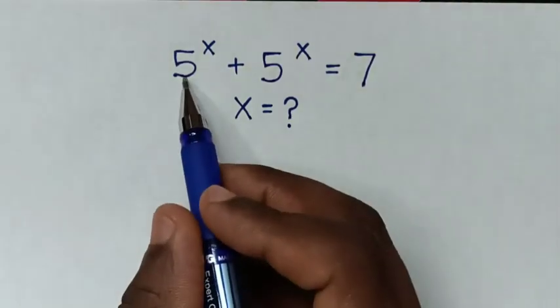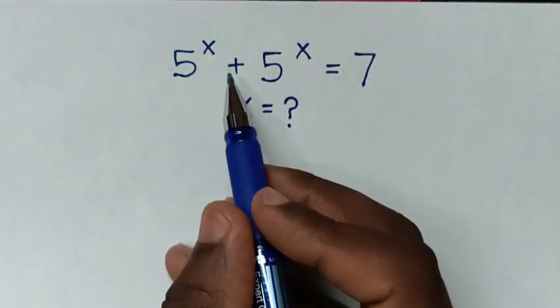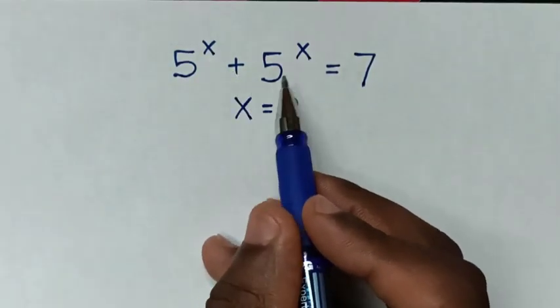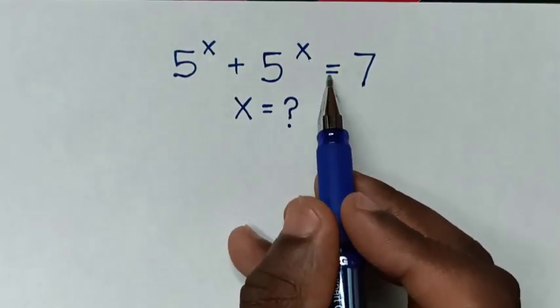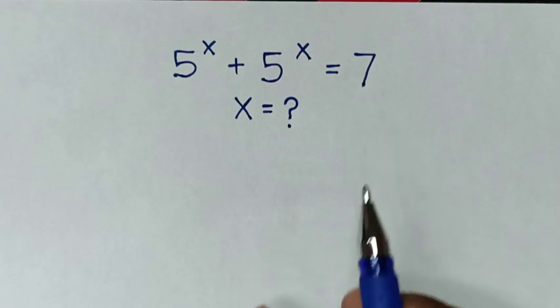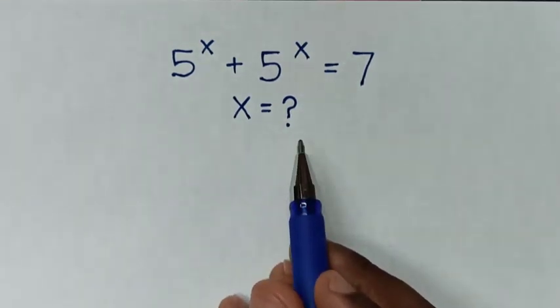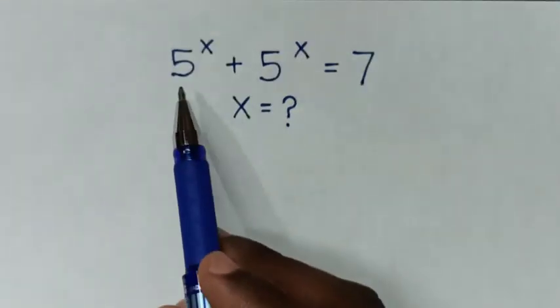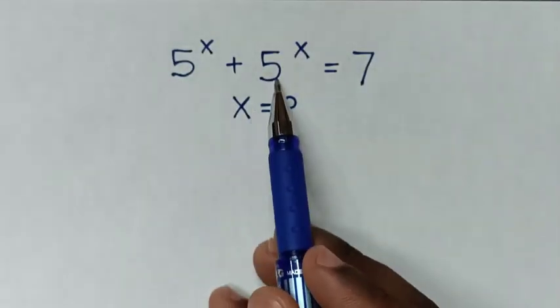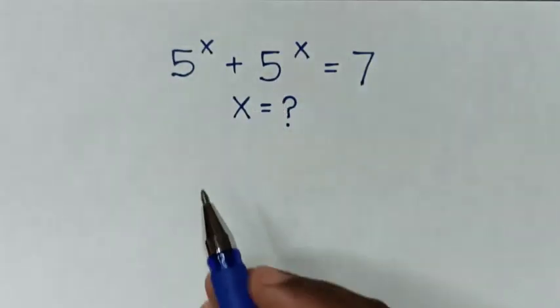Hello. How to solve 5 power of x plus 5 power of x is equal to 7, to find the value of x from this equation. So from this side, 5 power of x is common.